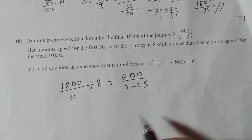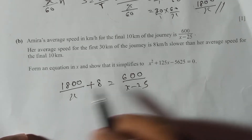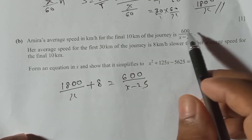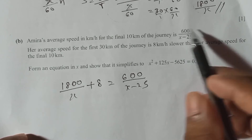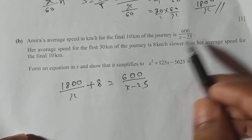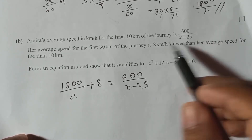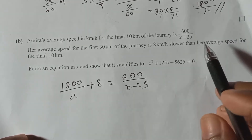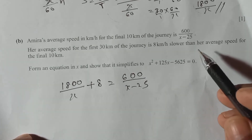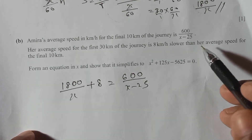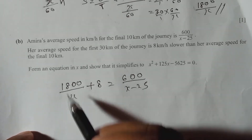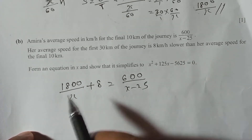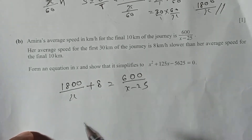Some might think to subtract 8 from the higher speed, but that approach is wrong. Normally, try to understand: to make an equation, we need to make something equal. So we add 8 to the smaller side.